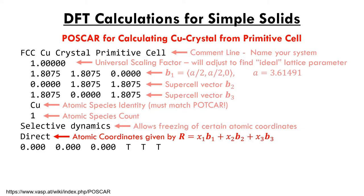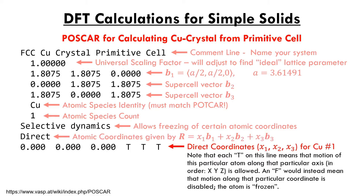For example, if you want your copper atom to move in the x direction but not y or z, you'd add 'T F F' after the nuclei coordinates. The ninth line tells VASP how you supply the coordinates — whether using Cartesian coordinates or direct (fractional) coordinates. Cartesian coordinates can be obtained from direct coordinates by the formula x = b1·d1 + b2·d2 + b3·d3, where b1, b2, b3 are the supercell vectors. The final lines list the coordinates of each atom, one per line.